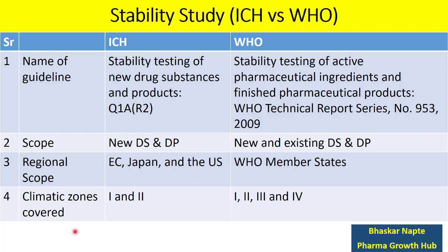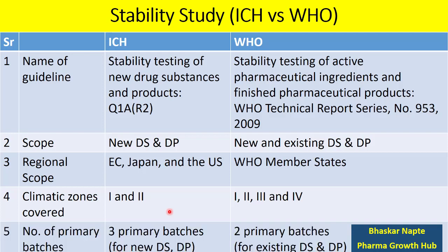What are the climatic zones covered under ICH? ICH predominantly covers Zone 1 and Zone 2. However, WHO considers all four zones: Zone 1, 2, 3, and 4.